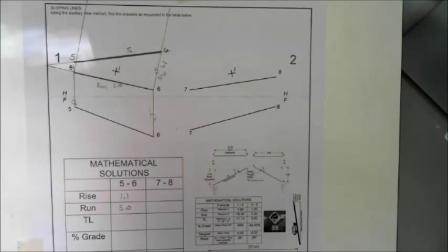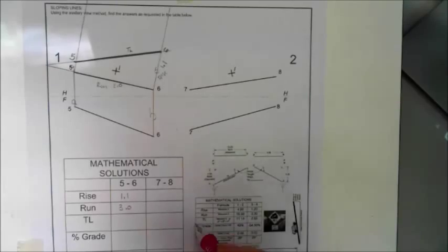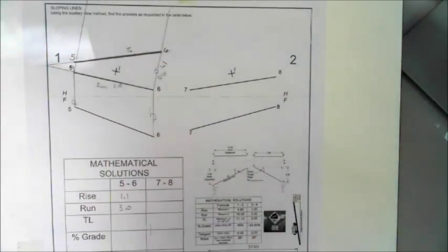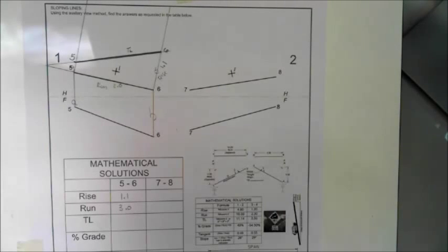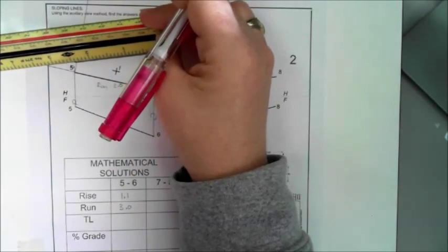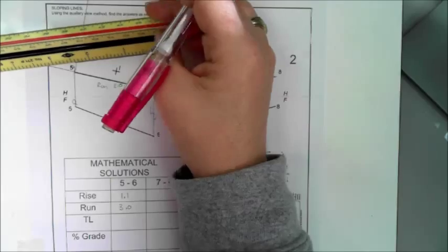Let's do some math. We could use Pythagorean theorem to find the true length of the line. We could do A squared plus B squared equals C squared, or in this particular case, because we've got it, we can just place that on there and we can find out what that is. We can find our true length of our line here is simply 3.24.